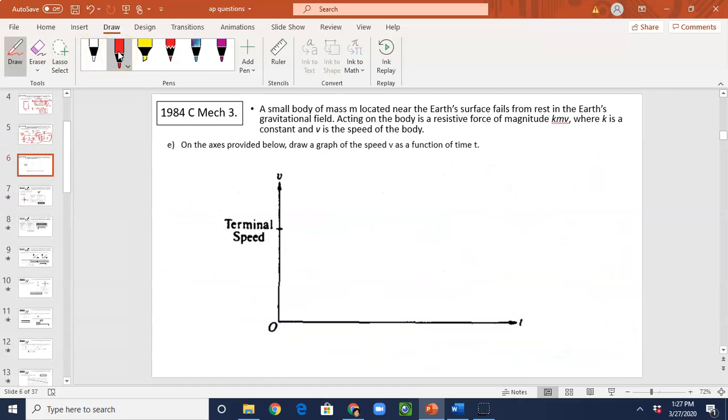Last one. On the axis provided below, draw a graph of speed V as a function of time. So we know this object is going down, right? And we have air resistance up. So that means acceleration is downward. It's getting smaller and smaller. It finally becomes zero. Acceleration becomes zero.